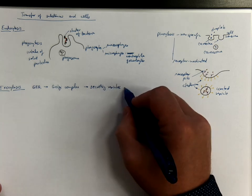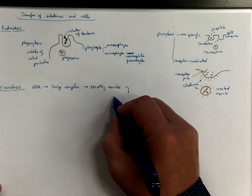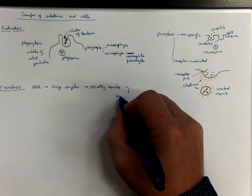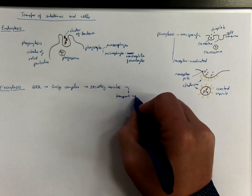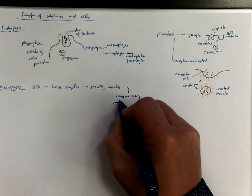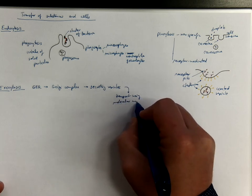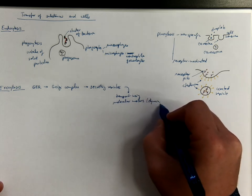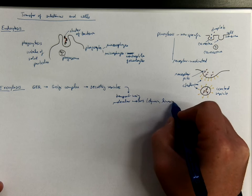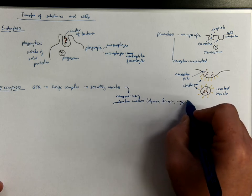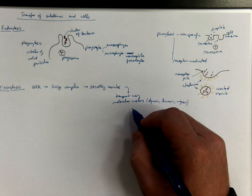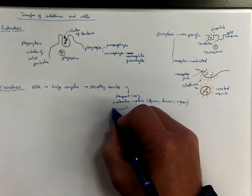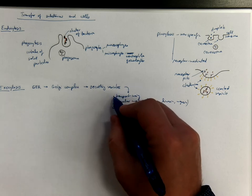And they are transported using molecular motors, which are molecules such as dynein, kinesin, or myosin, along the cytoskeleton, along the microtubules. And these vesicles fuse with the cell membrane.